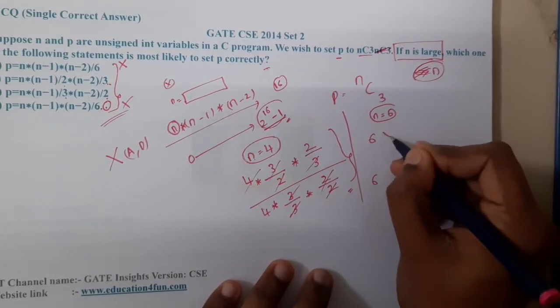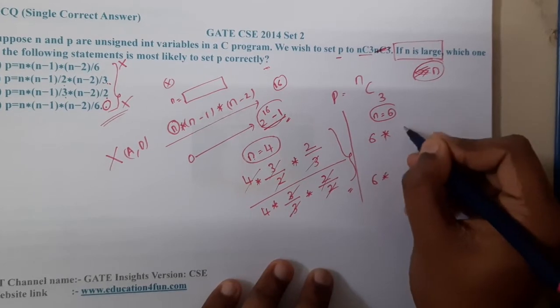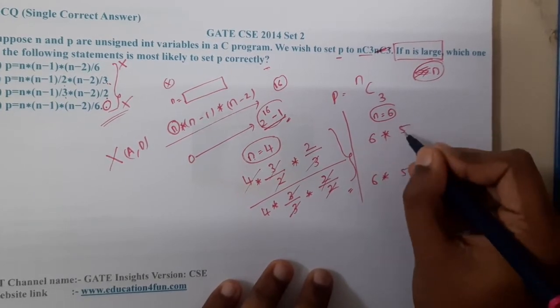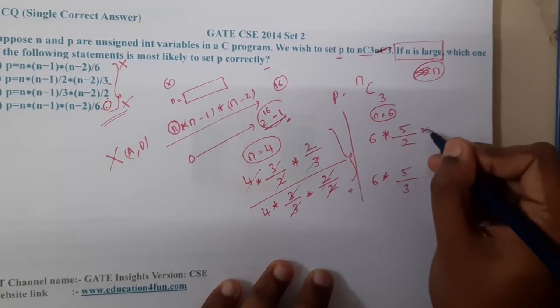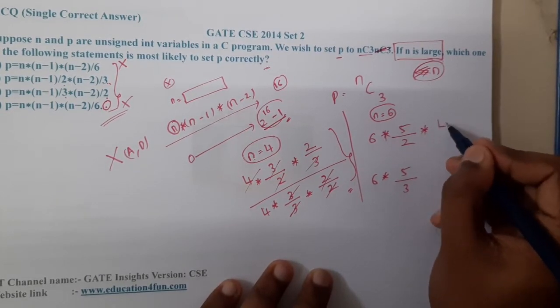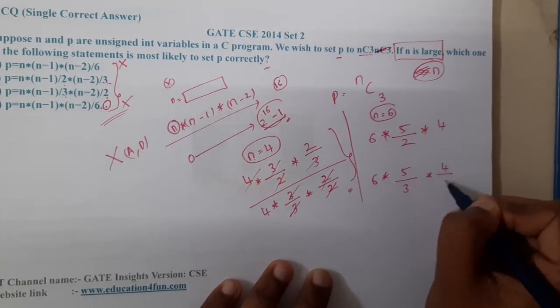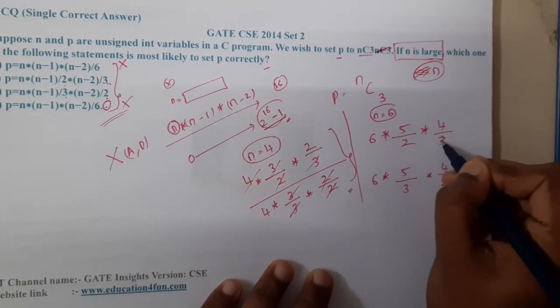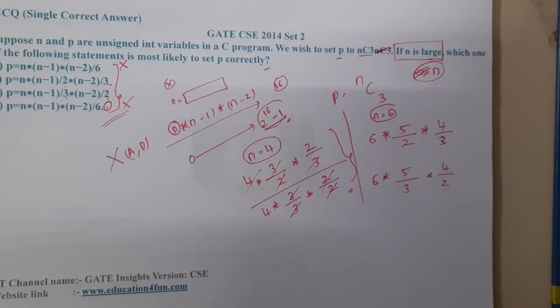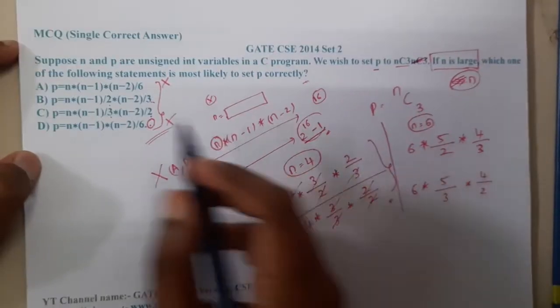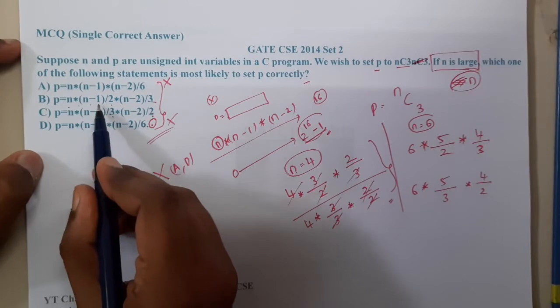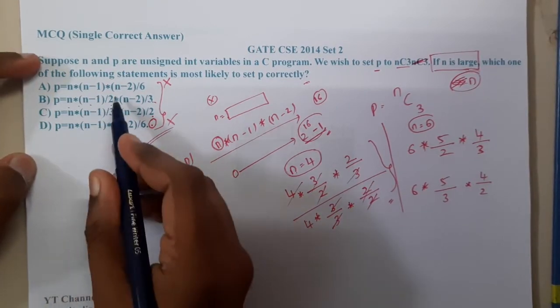In both values, n is 6. Here the value is 2, here the value is 3. Moving on, here the value is 4, here it's 4 by 2 by 3. Now if you observe carefully, it is always better to take n into n minus 1 by 2.